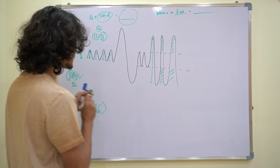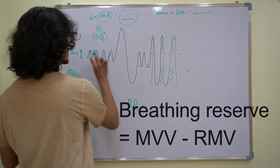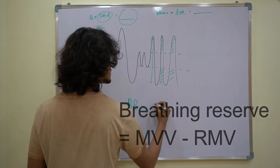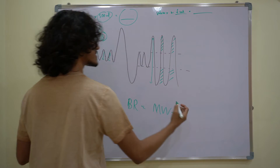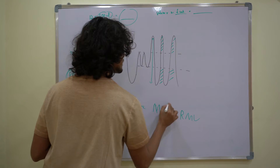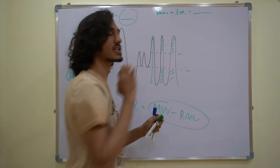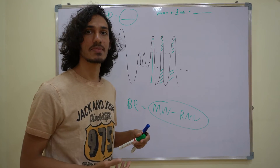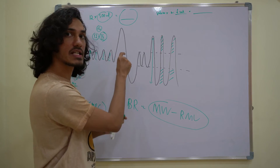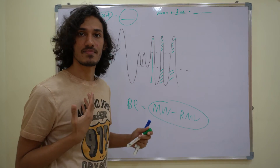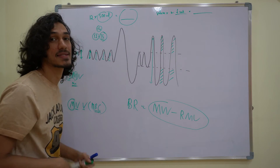How do you get that reserve? Breathing reserve is given by: maximum voluntary ventilation minus respiratory minute ventilation. That is how much in reserve to your tidal volume that you can additionally inspire and expire. In reserve to your respiratory minute ventilation, how much more can be fit in — that together forms your breathing capacity, maximum breathing capacity.